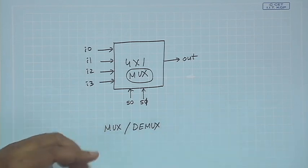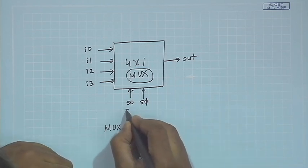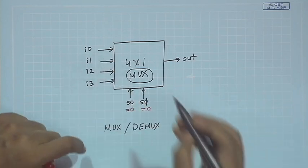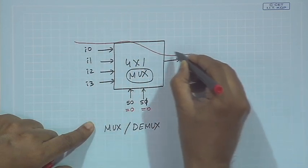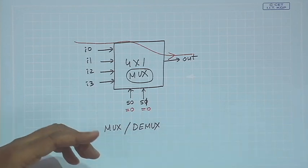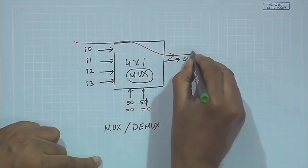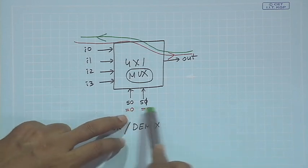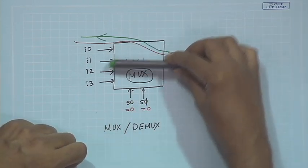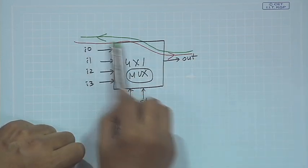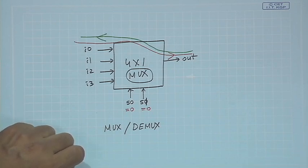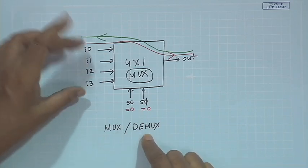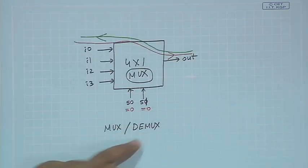What does that mean? Suppose I apply s0 equal to 0 and s1 equal to 0. That means i0 is selected, so current will flow from input i0 to out. Not only that — because the switches are bidirectional, current will also flow from the output node back into i0. Similarly, if I apply some other control signal, the current will get diverted to that particular input. Bidirectional means current can flow in any direction — multiplexing is many-to-one, demultiplexing is one-to-many.